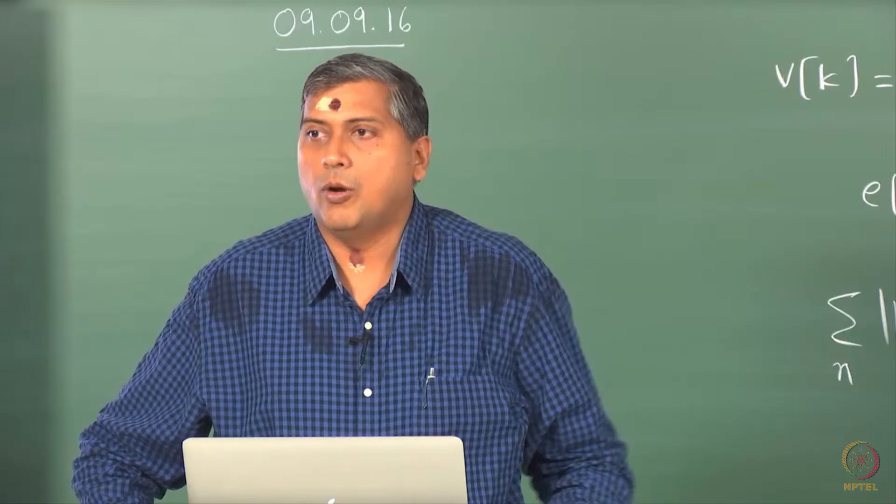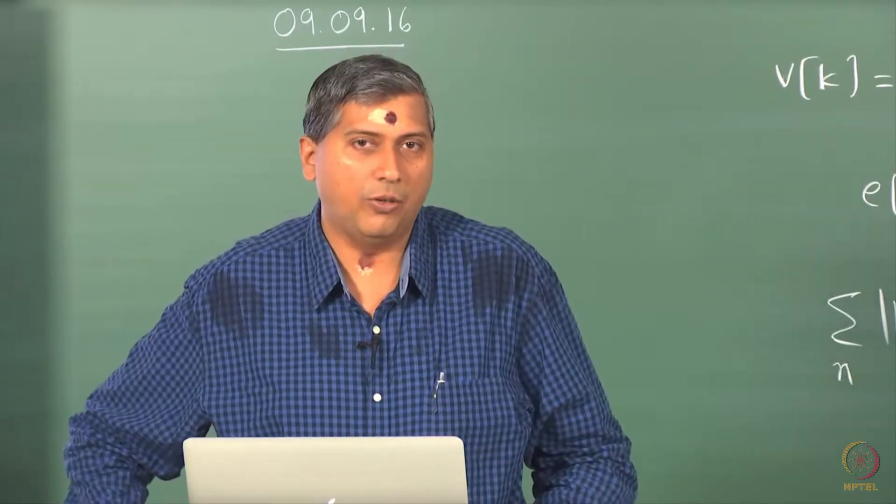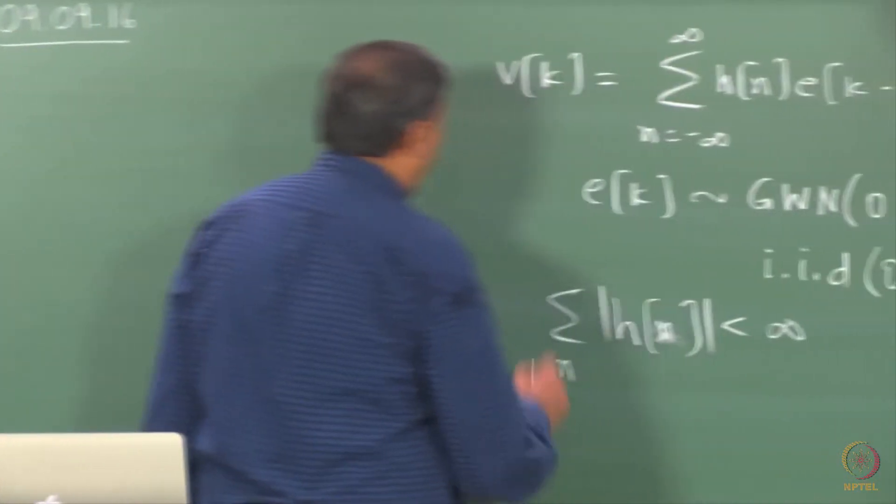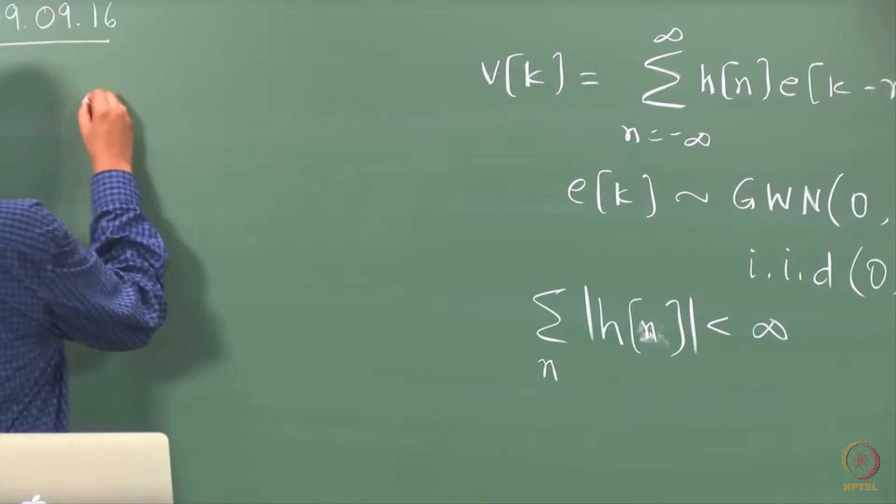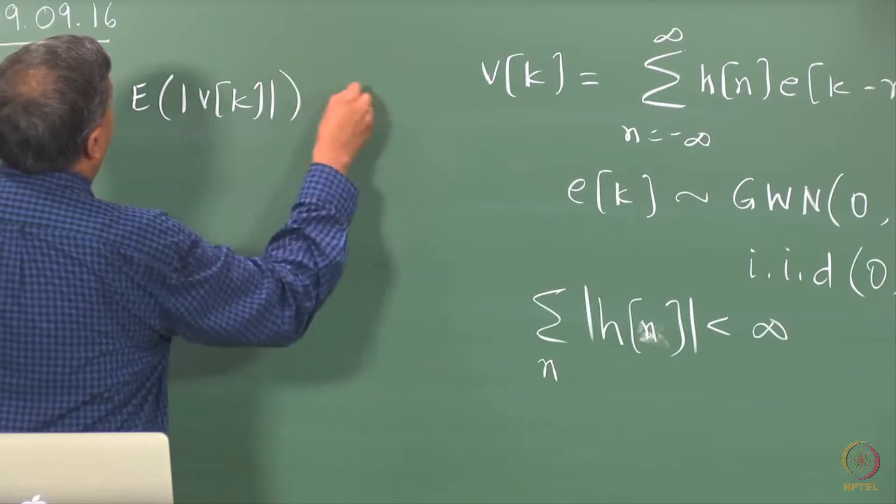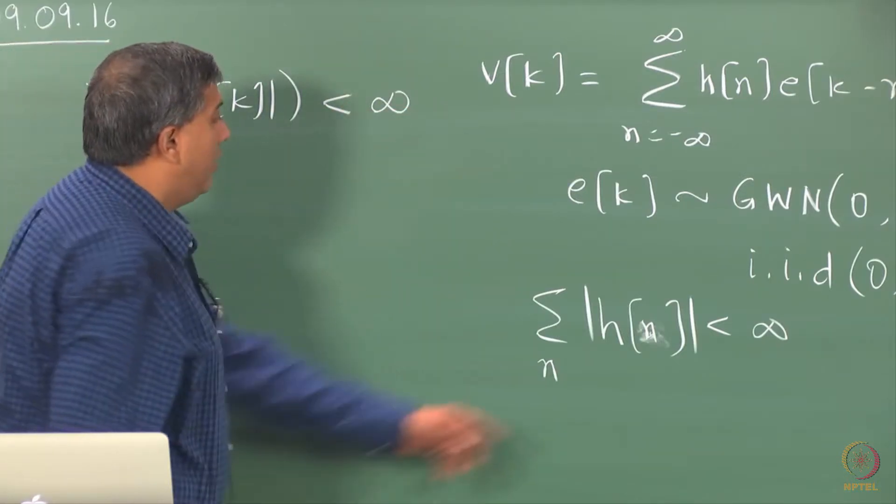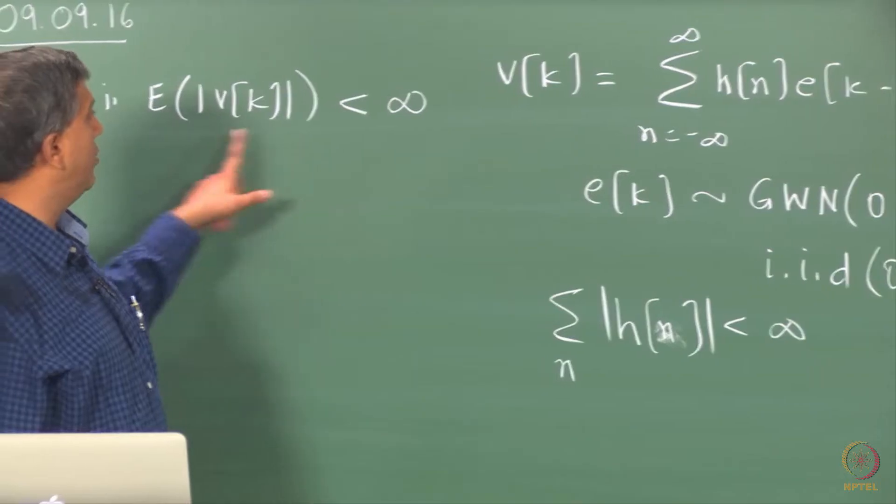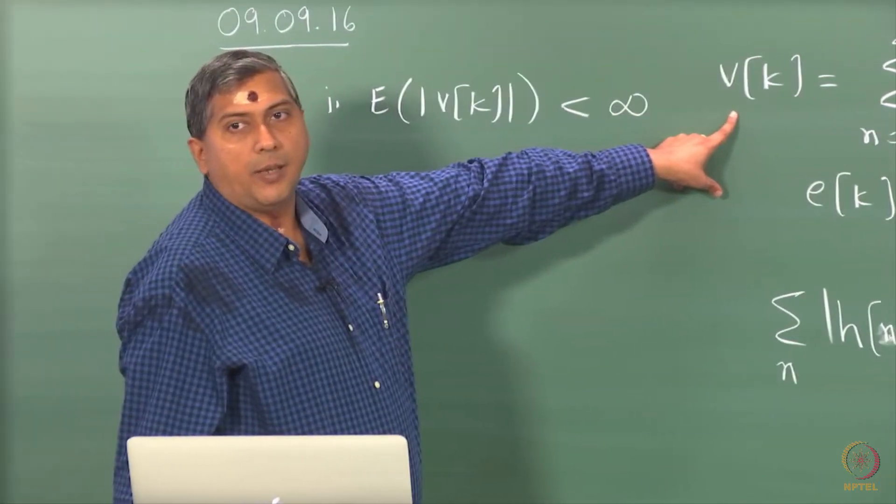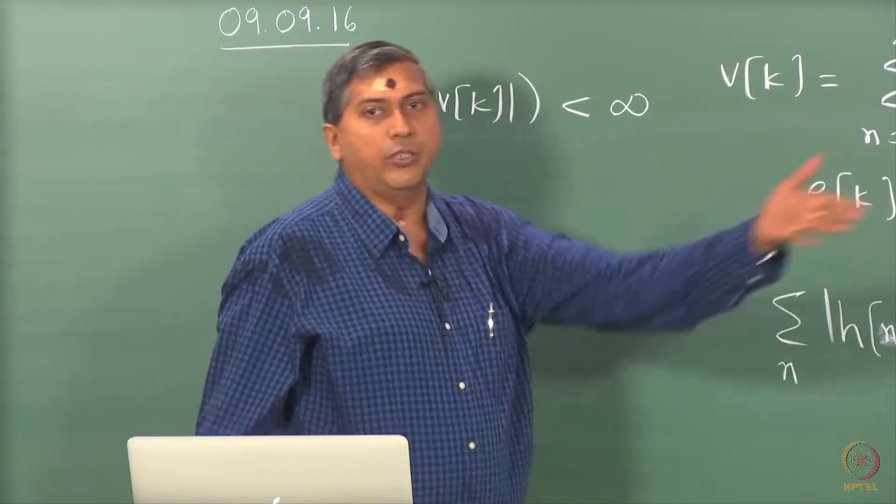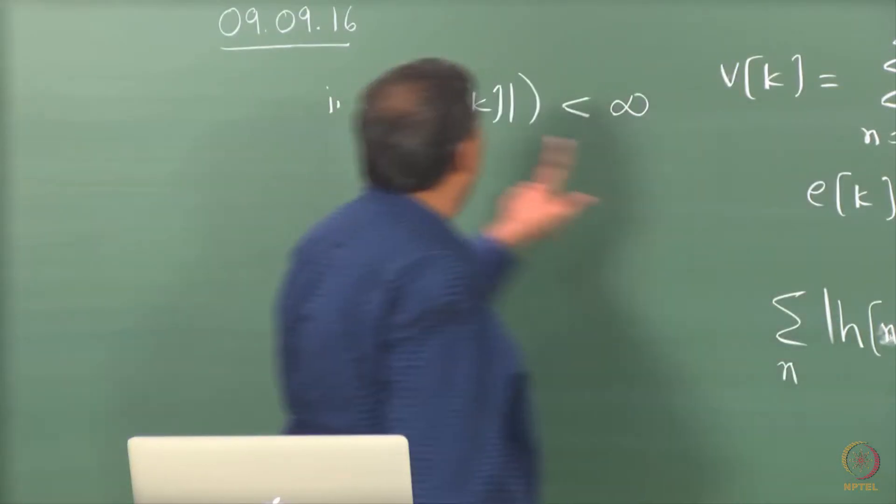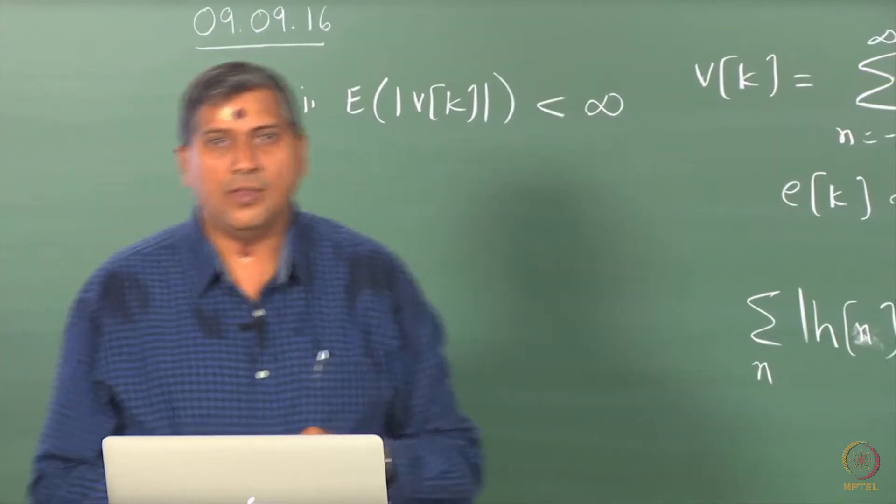But since Vk is a random variable, we do not talk about magnitude of Vk, we talk of expectation of magnitude of Vk, right? So that is one of the requirements, although that is not the only requirement for stationarity. So if you look at it from that viewpoint, then this condition here guarantees. That is fairly easy to prove. You actually take the magnitude on both sides, apply expectations and then use the Cauchy-Schwarz or the triangular inequality to show that if this is satisfied, then this is guaranteed, okay?